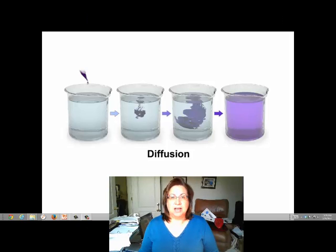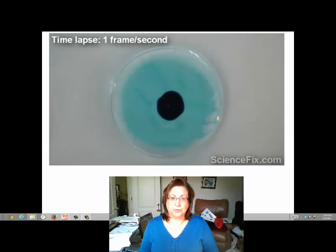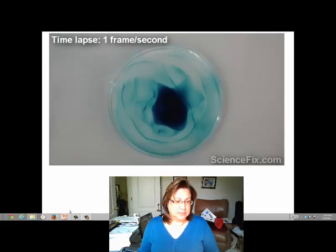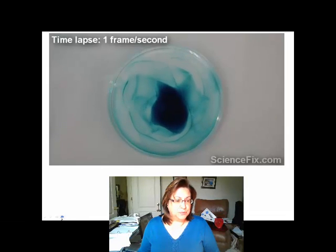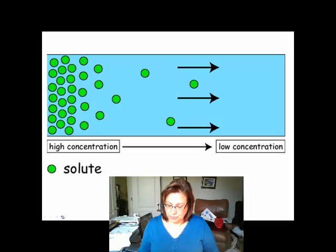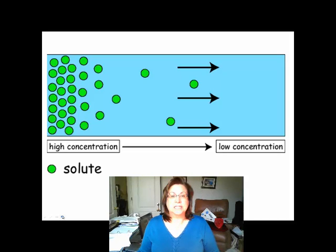Watching dye diffuse through water is a simple way to demonstrate diffusion. Over time, the dye molecules will distribute themselves throughout the liquid. The dye will move from an area where it's high in concentration to where it is low in concentration until it's equally distributed throughout the liquid.